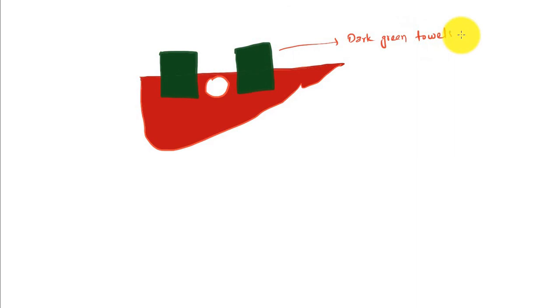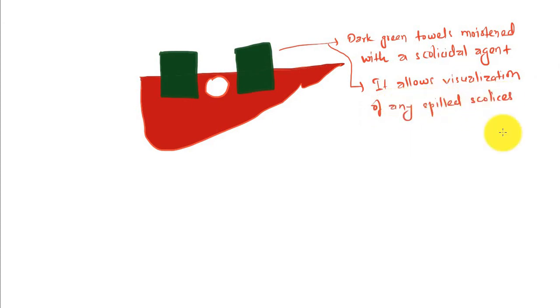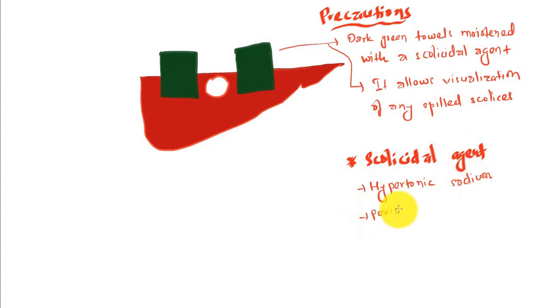The precautions of surgery are: dark green towels are moisturized with a scolicidal agent. It allows better visualization of any spilled content. The scolicidal agents are hypertonic sodium and povidone iodine.